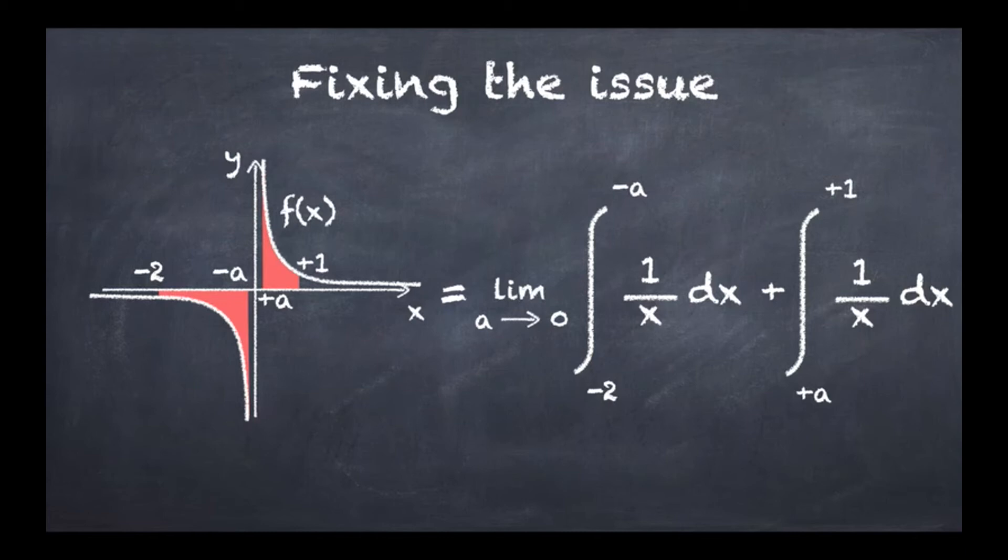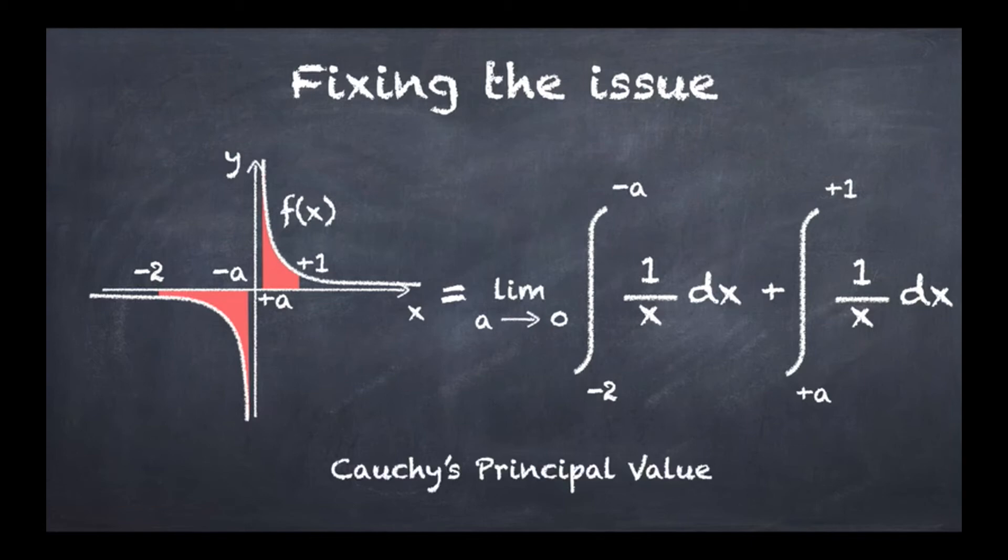So this particular strategy to make sense of integrals with graphs that have like punctures in them is what is called Cauchy's principal value. Now the way they are denoted is like this: PV of the integral from minus 2 to plus 1 of 1 over x dx.